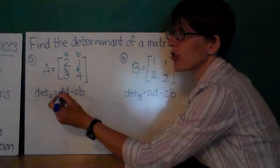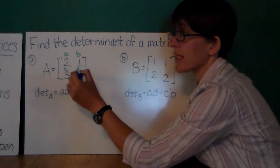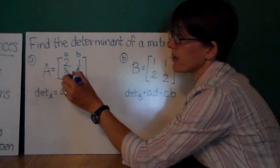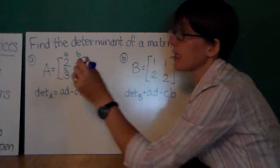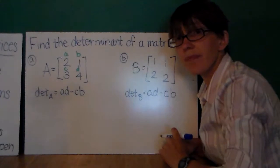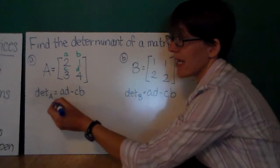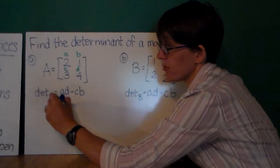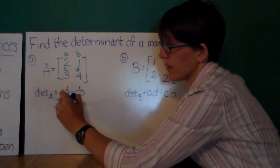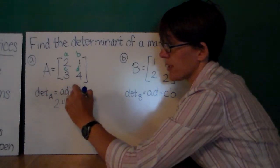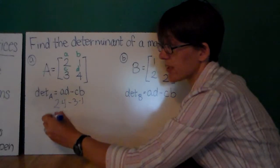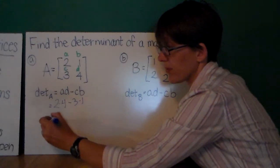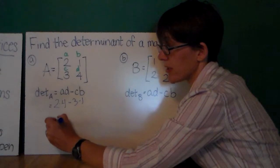To calculate the determinant, I'm going to multiply A times D, multiply C times B, and then subtract. So, I have 2 times 4 minus 3 times 1. This is 8 minus 3, which is 5.